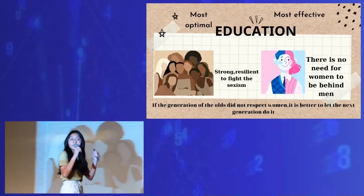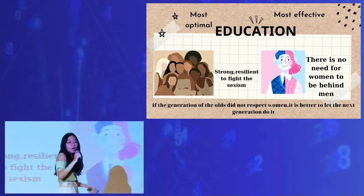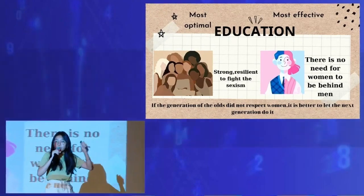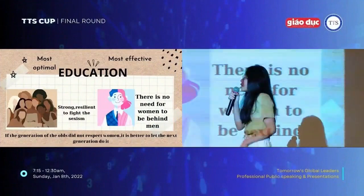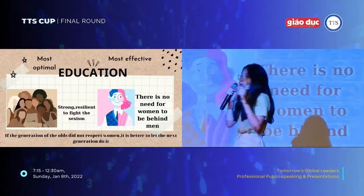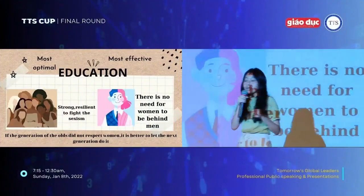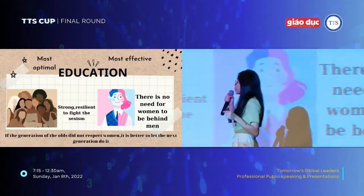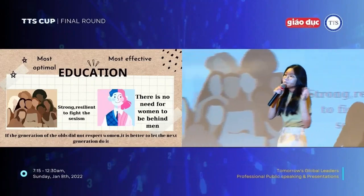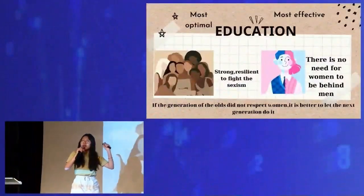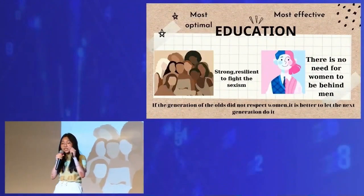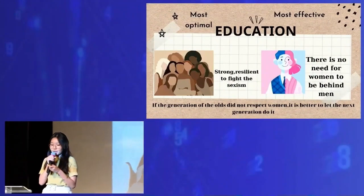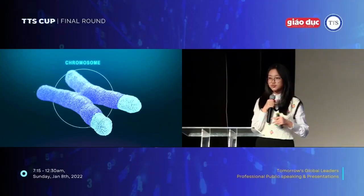If you really want to solve this problem, only education is the most optimal and most effective way. We should spread education to rural areas. Let girls know that they have to be strong and resilient to fight sexism. Besides educating girls, you have to let boys know that there is no need to demean women.